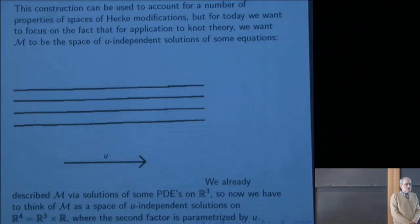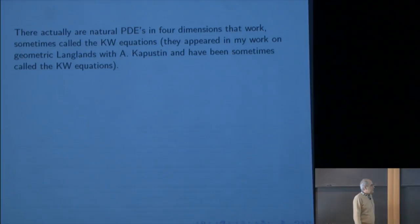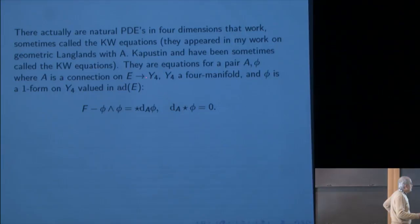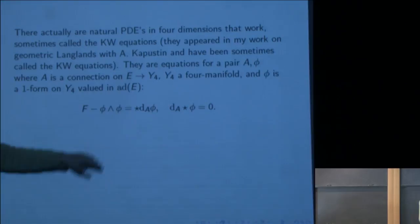There are natural PDEs in four dimensions, sometimes called the KW equations. They appeared in my work with Kapustin on geometric Langlands. These are equations for a pair (A, φ), where A is a connection on a G bundle over a 4-manifold and φ is a 1-form valued in the adjoint bundle. In the special case that Y^4 is W^3 × R, with A a pullback from W^3 and φ a zero-form times du where u parametrizes the second factor, these equations reduce to the Bogomolny equations.